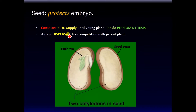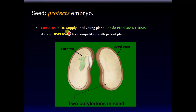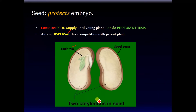Seed has many functions, but its primary function is to protect the embryo. It also contains the food supply for the young plant until it's able to do photosynthesis and sustain itself. Seeds also aid in dispersal of the plant — the farther away the seed lands from the parent plant, the less the competition between the parent plant and the young plant. The seed diagram before you shows the embryo and also the cotyledons in the seed, which is the stored food for the embryo.